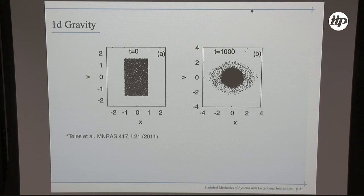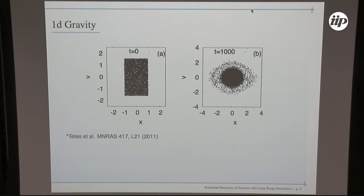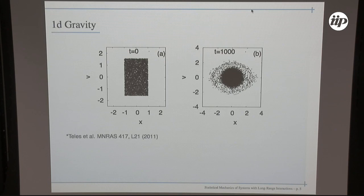This is the same system but for 1D gravity. The gravitational potential in one dimension is a linear function of separation between particles — you just solve the Laplace equation in 1D. We start with an initial state where particles are uniformly distributed in a rectangle in phase space, with position and velocity between minus one and one. As the system evolves, it arrives at a stationary state where all oscillations have died out. Again, there is the core and a halo of highly energetic particles around it, and it looks nothing like a distribution expected from normal equilibrium statistical mechanics.